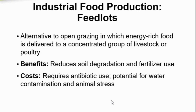Then we have industrial food production and feedlots — an alternative to open grazing in which energy-rich food is delivered to a concentrated group of livestock or poultry. The benefit is reduced soil degradation and fertilizer use, while the concerns include the required use of antibiotics, potential for water contamination, and animal stress.